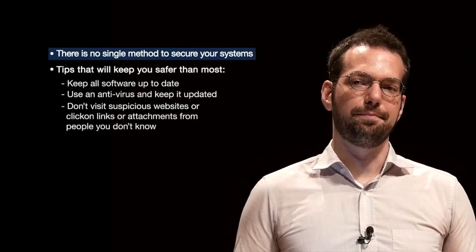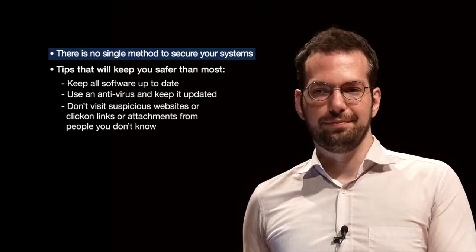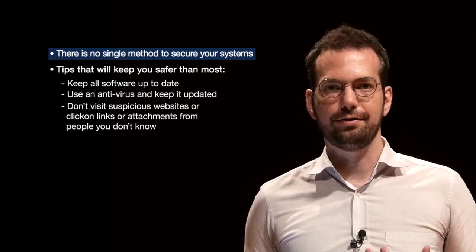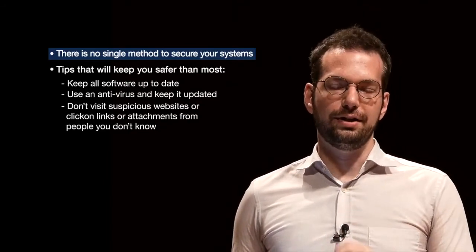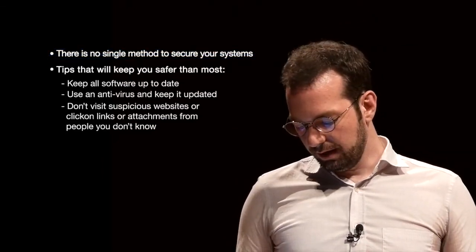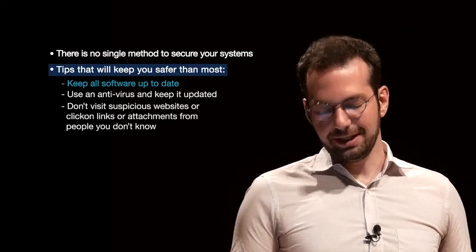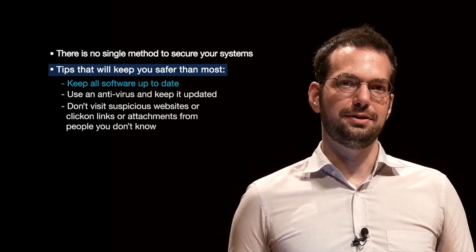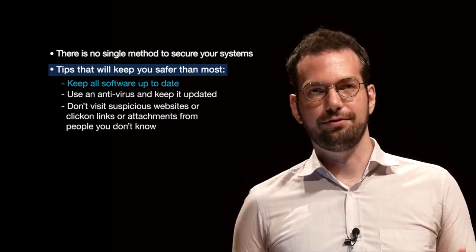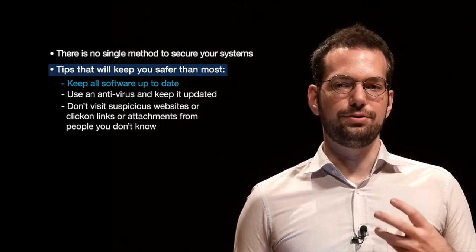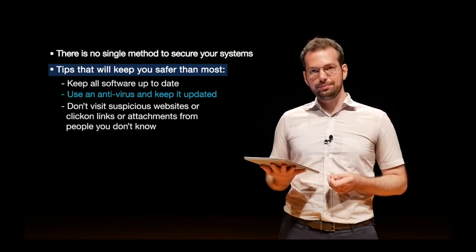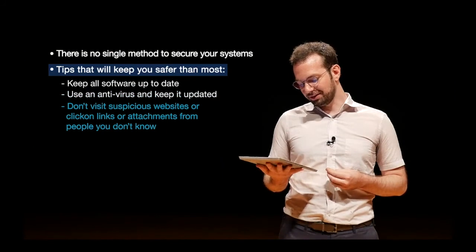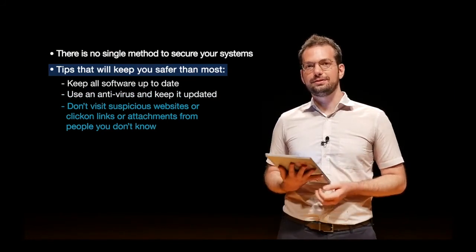There is no single method to secure your system. There are a lot of different technical methods as well as actions and things you should be aware of while using computers to secure yourself. If you do even basic things, the chance of you being attacked goes down significantly. Tips to keep you safer than most people: first, keep all software up to date — if your software is up to date, many viruses have a harder time attacking your system and certain vulnerabilities hackers use won't work. Next, use an antivirus and keep it updated. And don't visit suspicious websites or click links or attachments in emails.